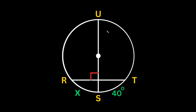In the next circle, a diameter and a chord again intersect at a 90-degree angle, making both sides of the chord congruent. Since the two chord halves are congruent, their arc measures are also congruent to one another. So if one arc is 40 degrees, the other arc is also 40 degrees.